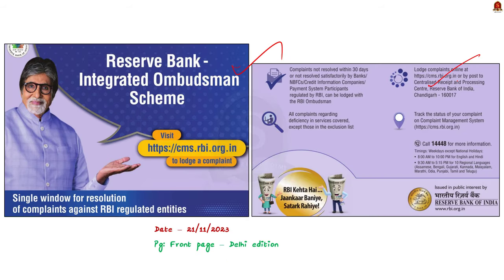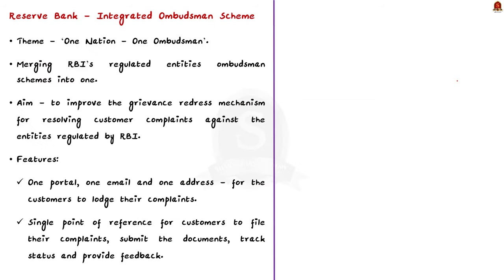This article from the front page of the newspaper talks about the Integrated Ombudsman Scheme of RBI. An ombudsman refers to an official appointed to investigate complaints of individuals against a company, organization, or public authority — essentially a grievance redressal officer or system. Major public sectors have ombudsmen; for example, in banking, we have the Banking Ombudsman, a senior official appointed by the Reserve Bank of India.